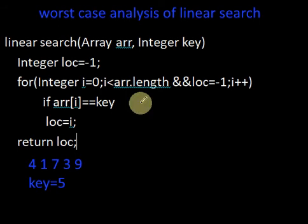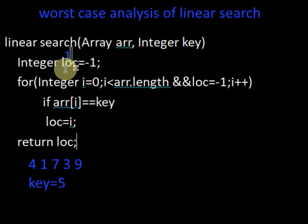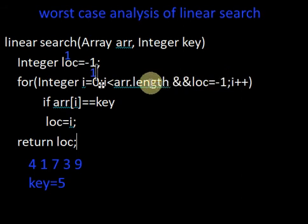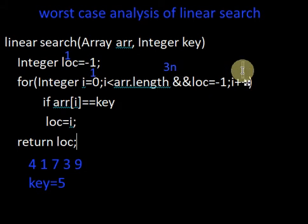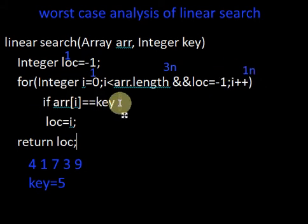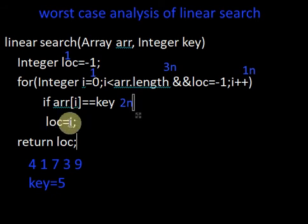Let's see which operations are executed in the worst case and how many times. 'Integer location equals minus one' is executed once, irrespective of how many times the for loop runs. The initialization statement is also executed once. The condition check has three operations executed n times. The i++ increment has one operation executed n times. The comparison has two operations executed n times. Since we are considering the case where the element is not present in the array, the update statement is not executed. Finally, 'return location' is executed once.